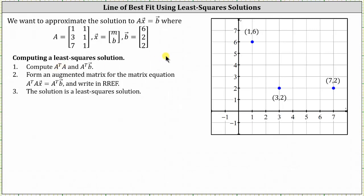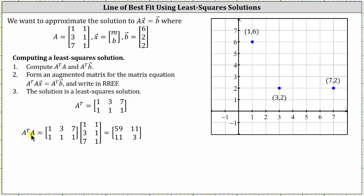Let's first find A-transpose given matrix A. The first column of A is 1 3 7, which becomes the first row of A-transpose. The second column of A is 1 1 1, which becomes the second row of A-transpose. A-transpose times A results in the 2 by 2 matrix with entries 59, 11, 11, 3. A-transpose times vector b results in the 2 by 1 matrix with entries 26, 10.